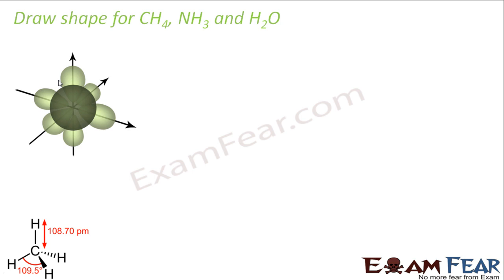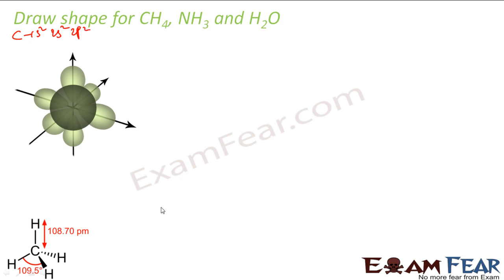Let's take the carbon molecule. Carbon has atomic number 6, so its configuration is 1s2, 2s2, 2p2. So my 1s orbital will have two electrons, 2s orbital will have two electrons, and 2p orbitals will have two electrons. In the excited state, one electron is promoted from 2s to 2p, giving 1s2, 2s1, 2p3. This is the excited state of carbon.